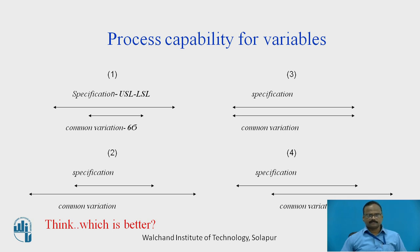Think which is better. Among the four options for the relationship between USL minus LSL with respect to Six Sigma Dash, which is better? Naturally, the first one — where the specification limit USL minus LSL is greater than Six Sigma Dash — is better, and both should be centered at one point.